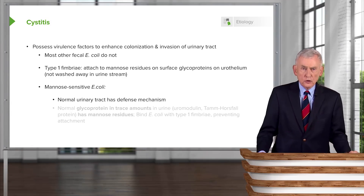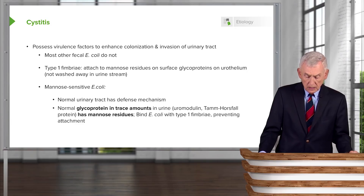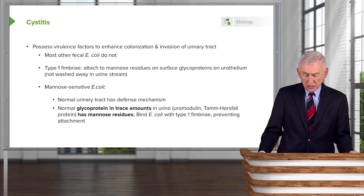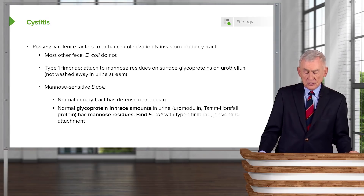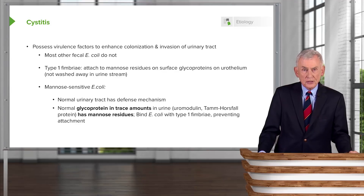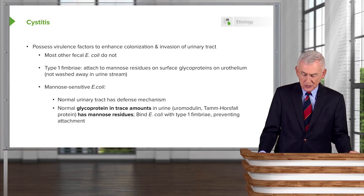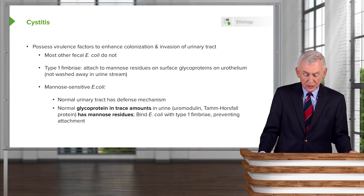Furthermore, the normal urinary tract has a defense mechanism. There is a glycoprotein present in trace amounts in urine called uromodulin — the old name is Tamm-Horsfall protein. This uromodulin has mannose residues on it, so mannose-sensitive E. coli will bind to the uromodulin and be washed away in the urine stream, never getting a chance to attach.